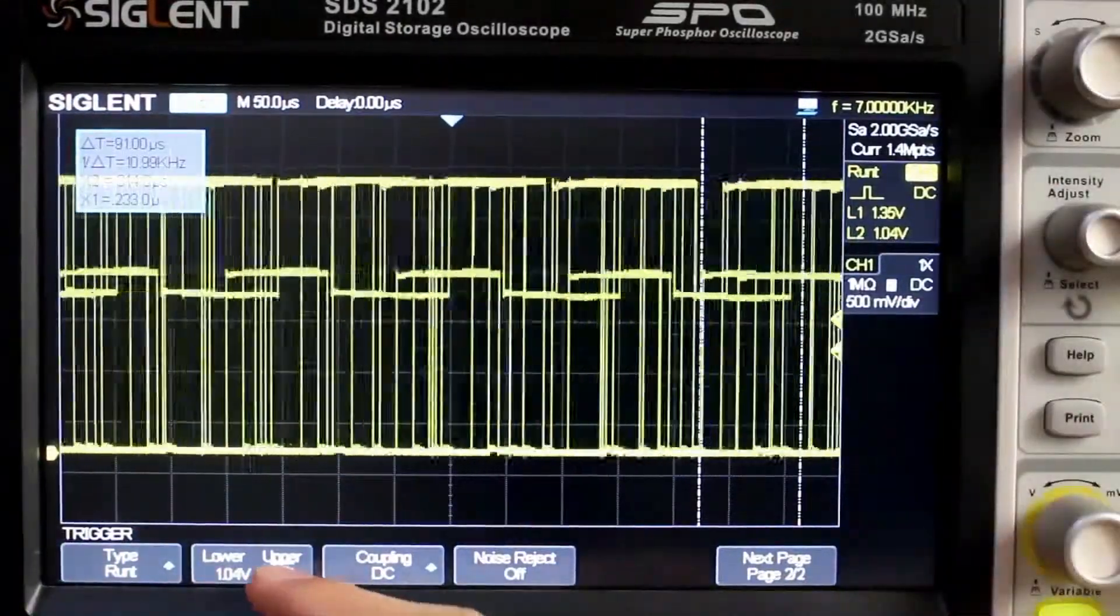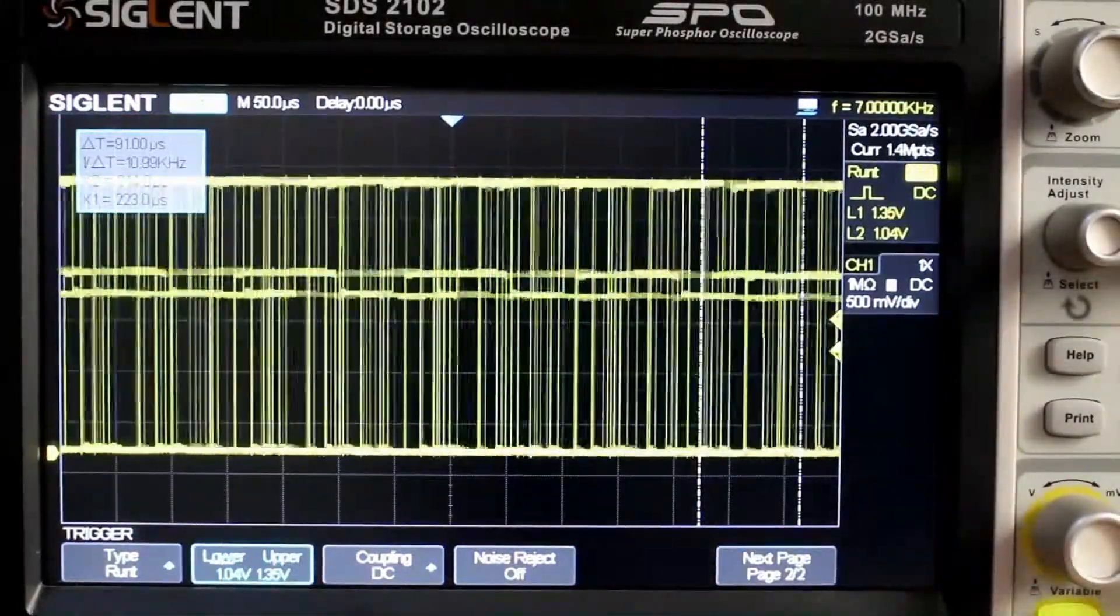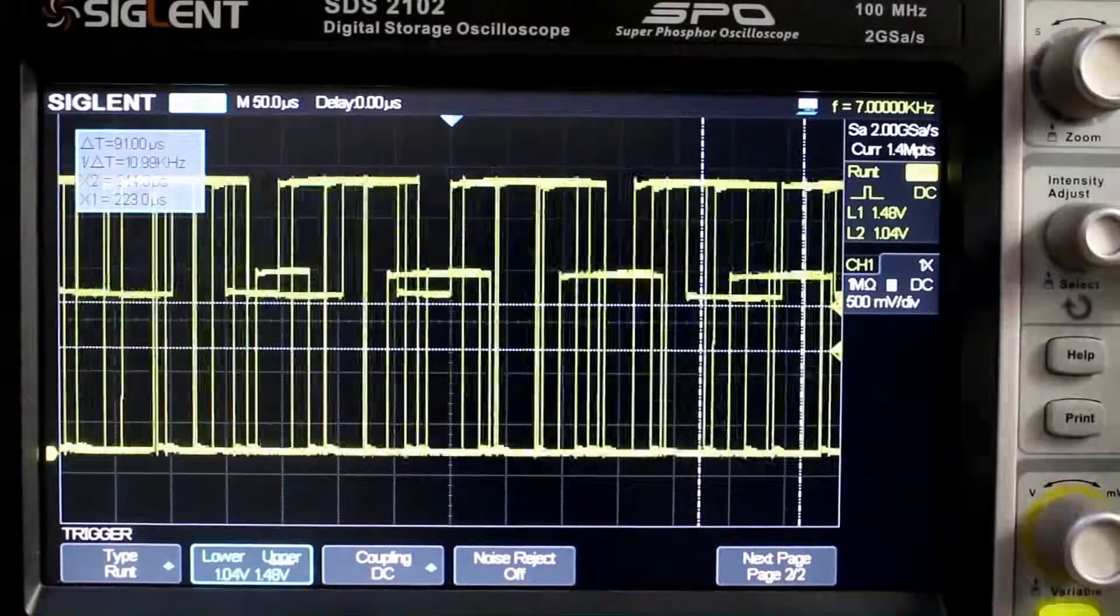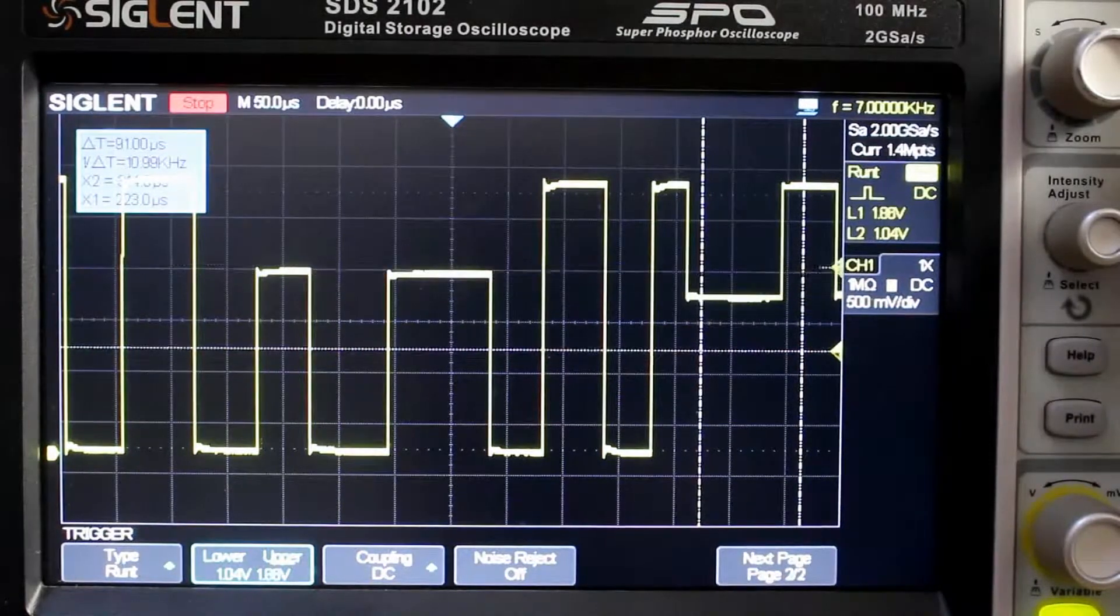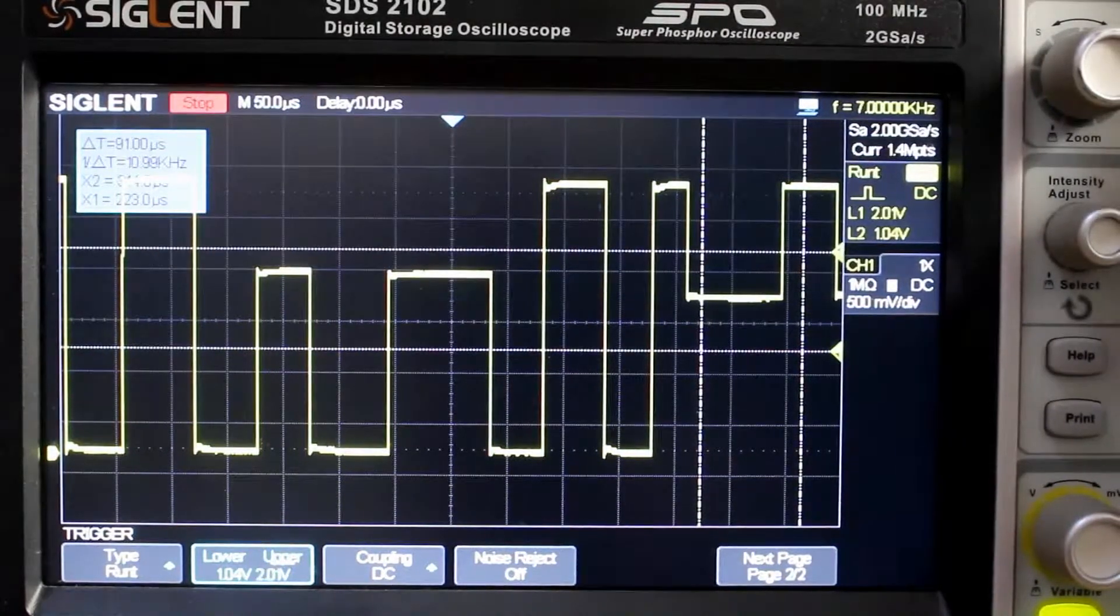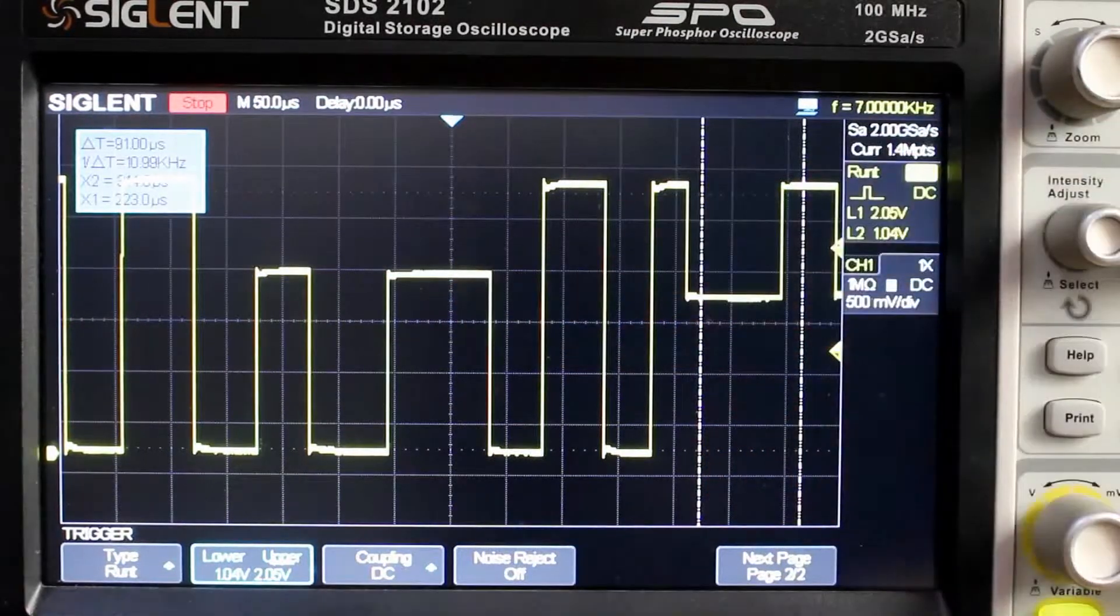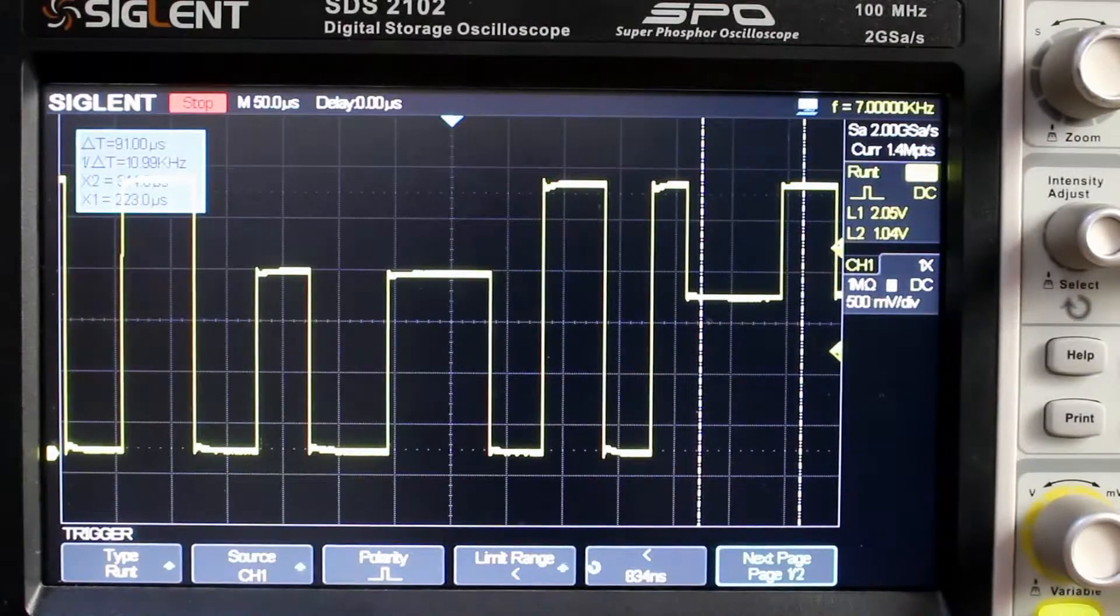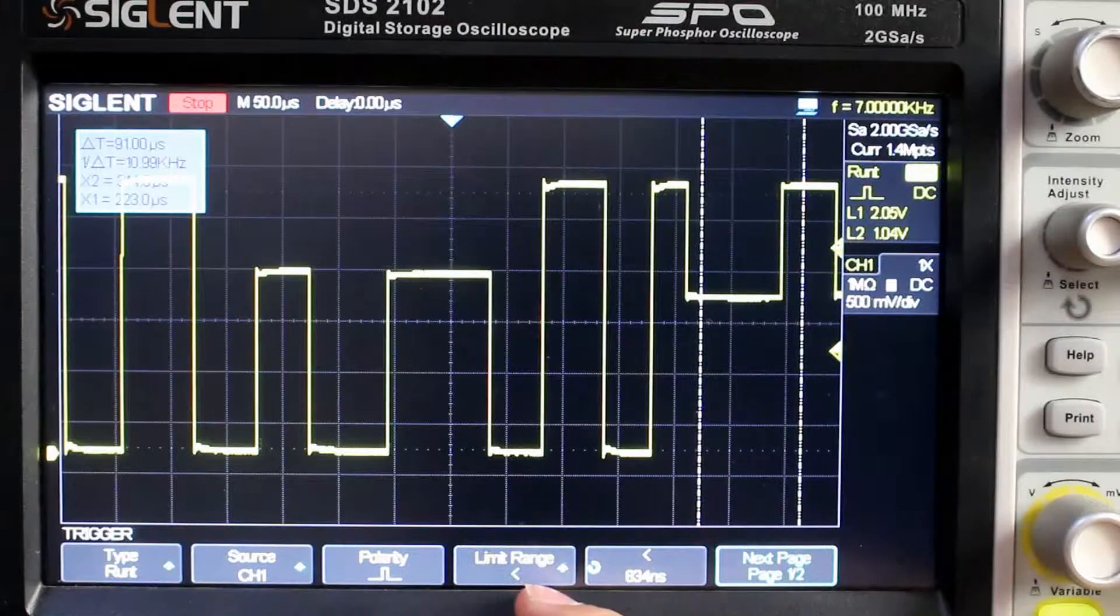Okay, now we need to set our voltage range, so if we stop it again, we can have a look, and then we can adjust our voltage range just to catch those RUNT pulses. Okay, so you can see both the positive and negative RUNT pulses will be within our range, but we're setting the polarity to positive.